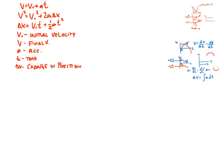When looking at word problems, you pick out initial velocity, final velocity, acceleration, and time, then choose which equation to use based on the information you have. If it's not a free fall problem, find your acceleration first. If it is a free fall problem, remember that acceleration equals g, which is 10 meters per second squared downward.